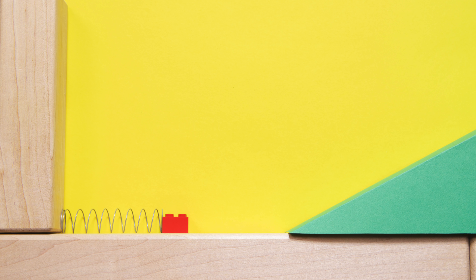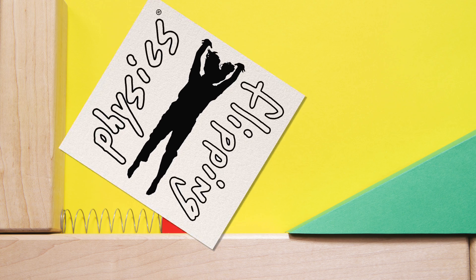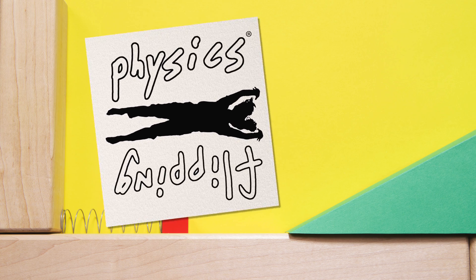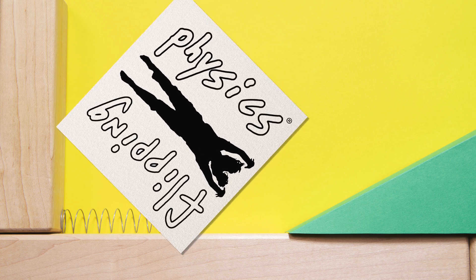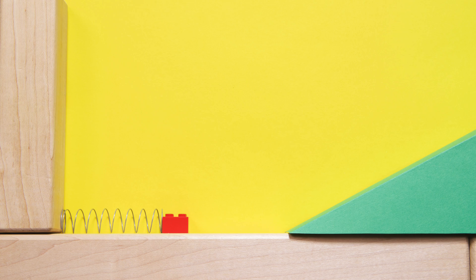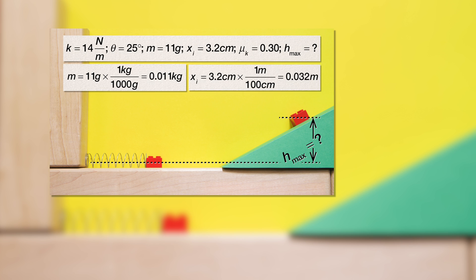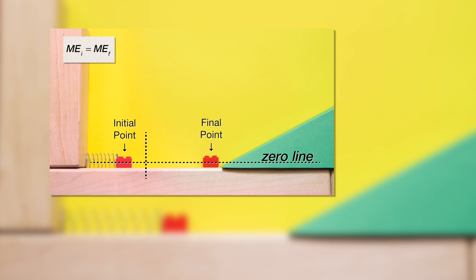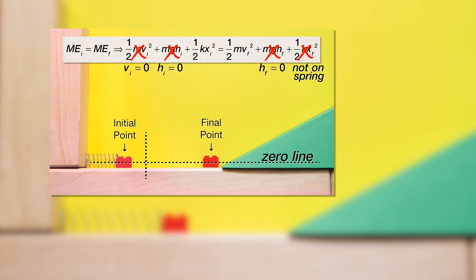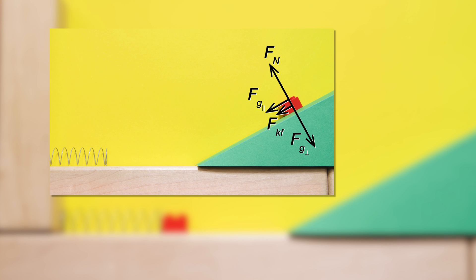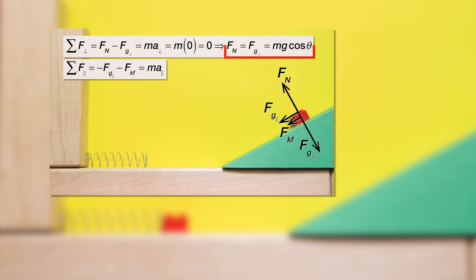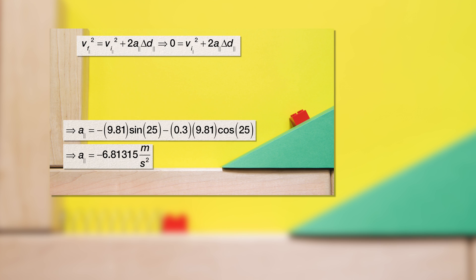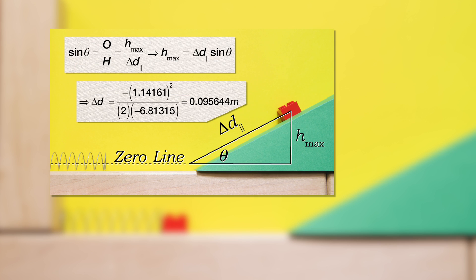Good morning. This is Billy again and this is another video project for Mr. P, who asked me to show that the conservation of energy problem with friction, an incline, and a spring can also be solved using the work due to friction equals change in mechanical energy equation. So here goes.